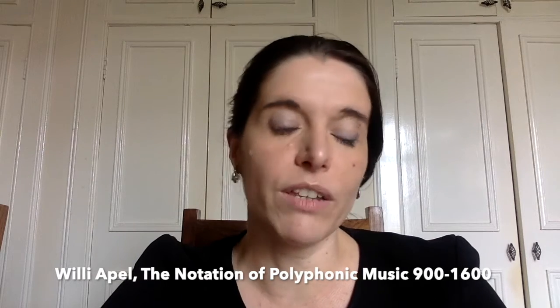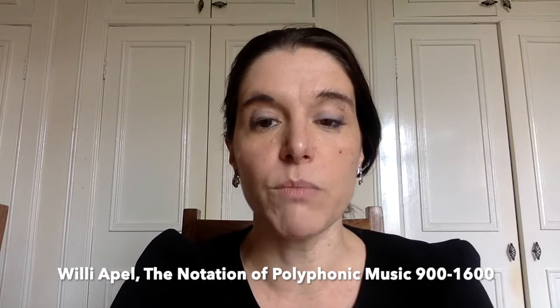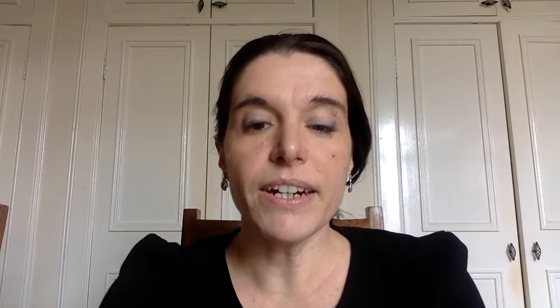I'm going to show you a slide from Willi Apel's book on the notation of polyphonic music — a book I recommend if you're interested in medieval and Renaissance music. Here, Apel gives you, based on medieval treatises, the different types of combinations of note values in this repertoire: the six modes that you can find.